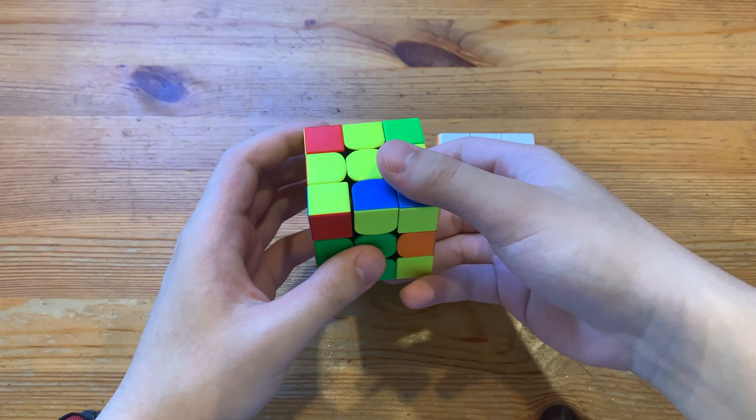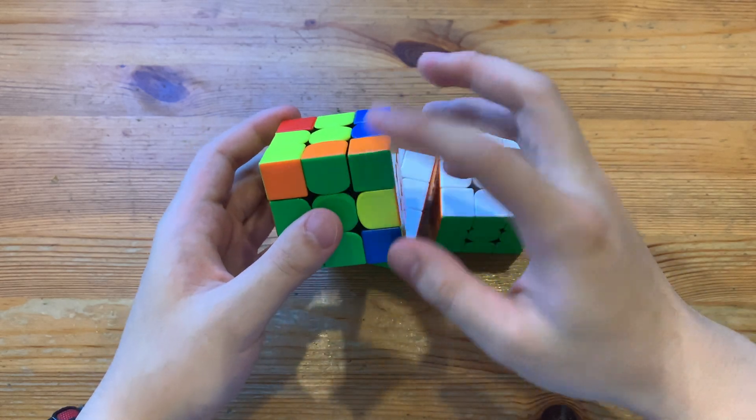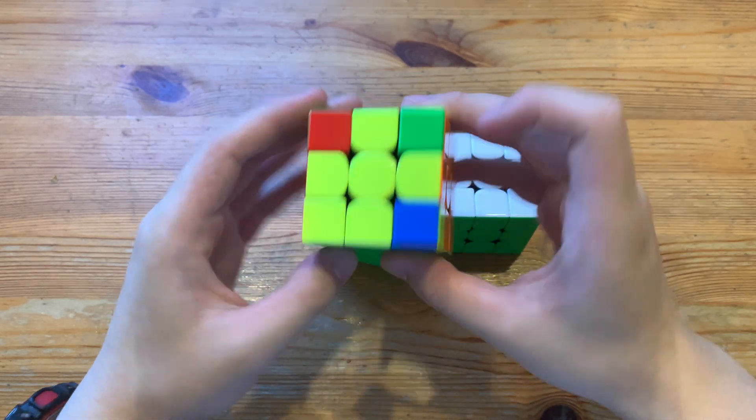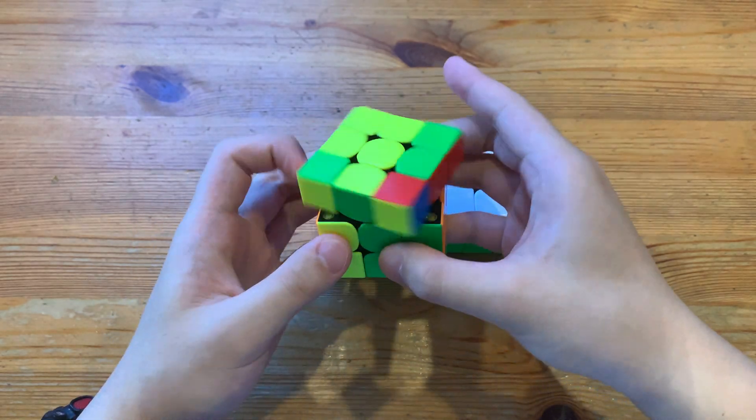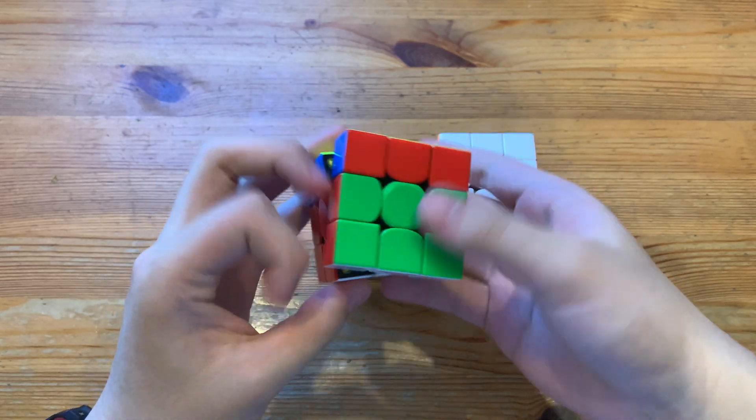And here, I'll probably just do u prime, insert with, paired up with r, ur prime, and then do that for getting my edges oriented. And then here, I'll do OLL, and PLL.